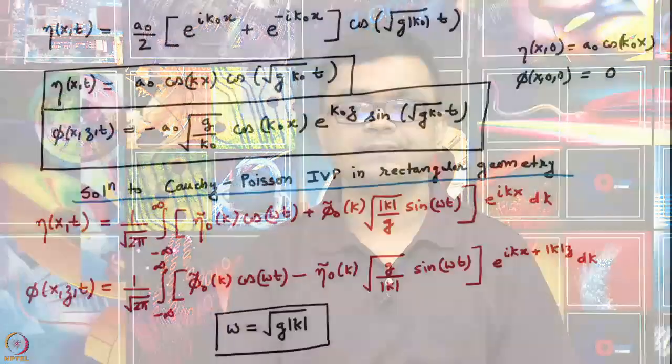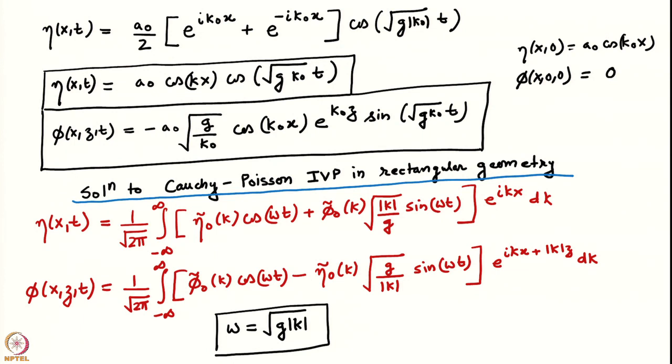We had obtained the solution to the Cauchy-Poisson problem for deep water waves — surface gravity waves in rectangular geometry. The final answer was expressible as a Fourier integral. A natural question arises: how does one evaluate these integrals, particularly for more complicated initial conditions? We will look at some examples later, but for now let us keep the answers in integral form. We will also see that one can approximate these integrals in the limit of t going to infinity using a particular mathematical technique.